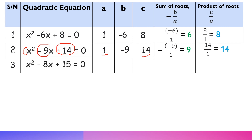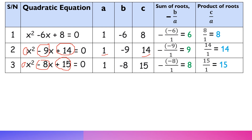For the third example, x squared minus 8x plus 15 equals zero. Our a is 1, b is minus 8, and c is 15. The sum of roots is minus b over a, which is minus(minus 8) over 1, giving us 8. The product of roots is c over a, which is 15 over 1, giving us 15.